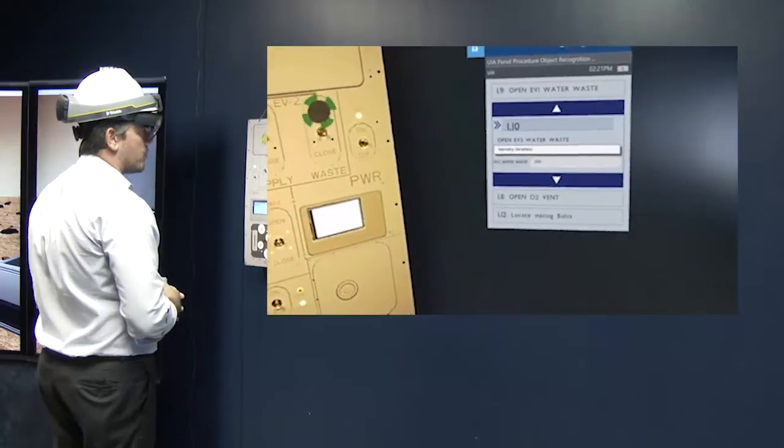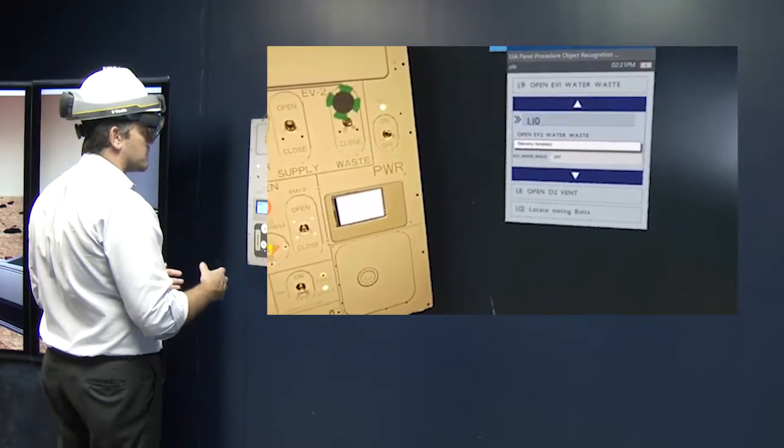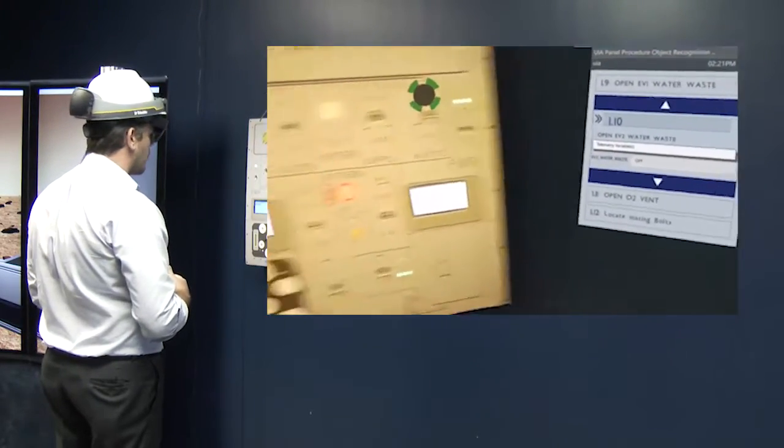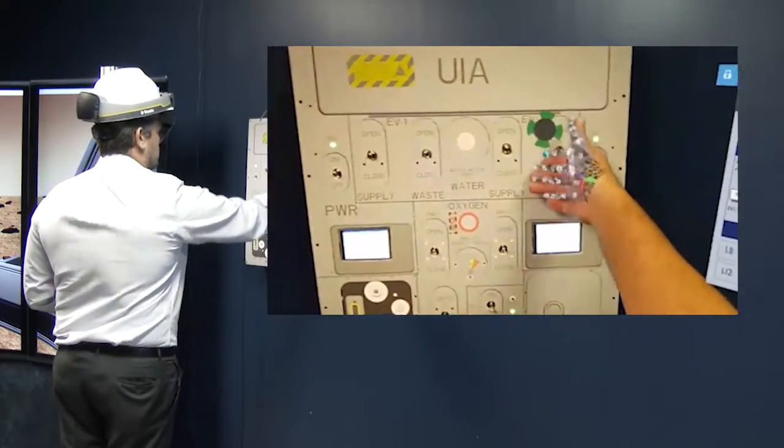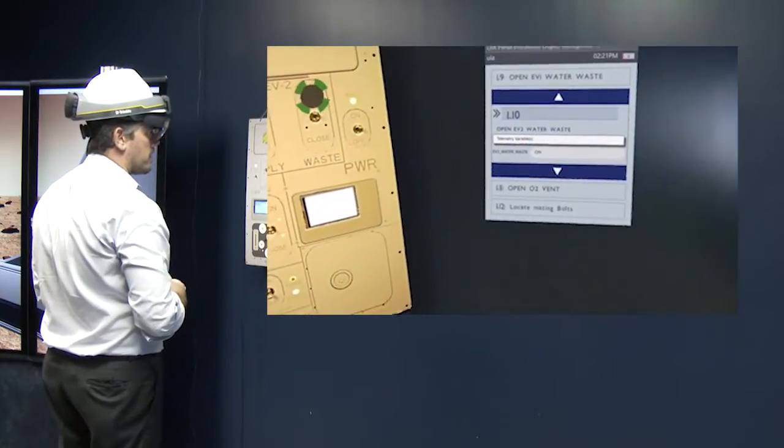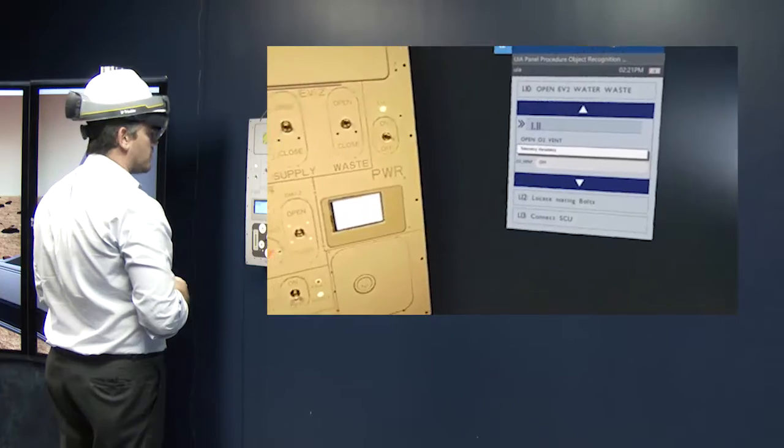Now I'm on step 1.10. This is the telemetry variables. So I need to open up the EV2 water waste. That is open. From there, I need to open the O2 vent.